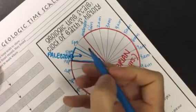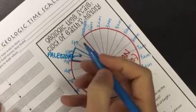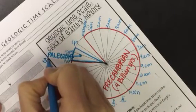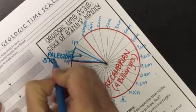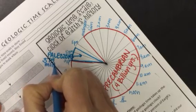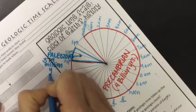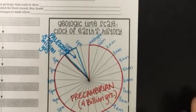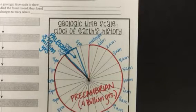And the Paleozoic era was roughly 300, 375 million years in duration. And I know it's a small little area to write in, but hopefully you get the idea.